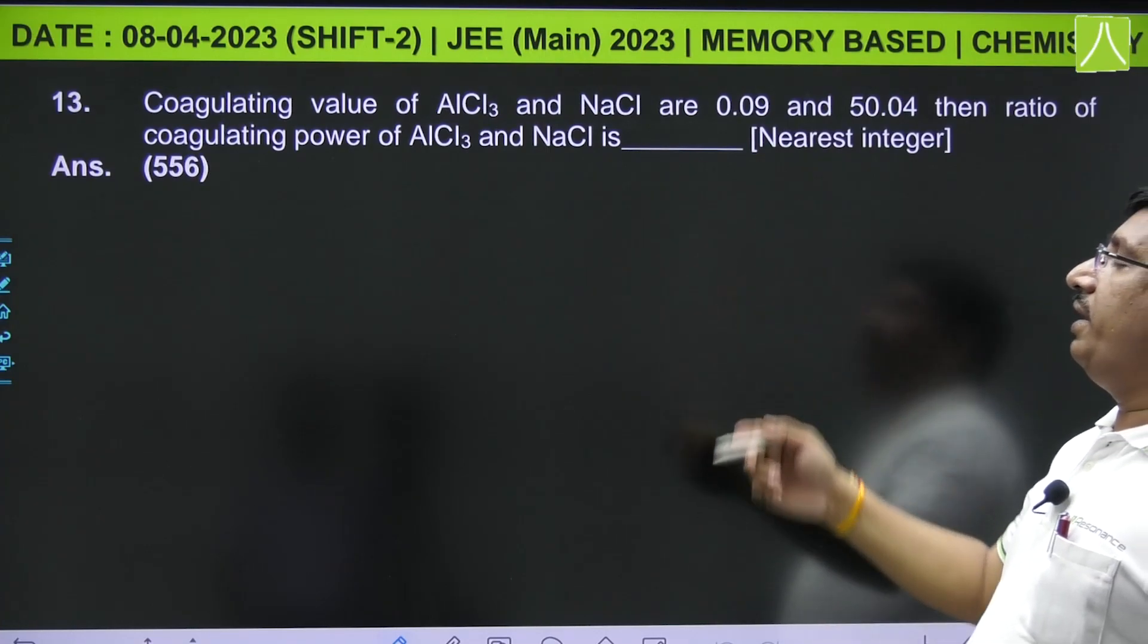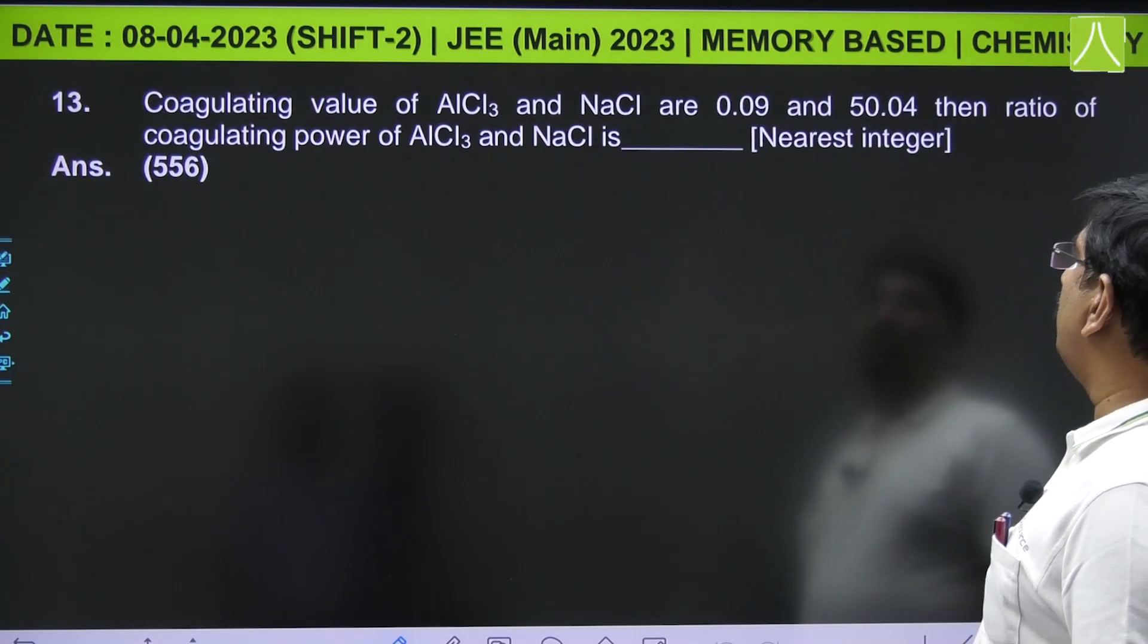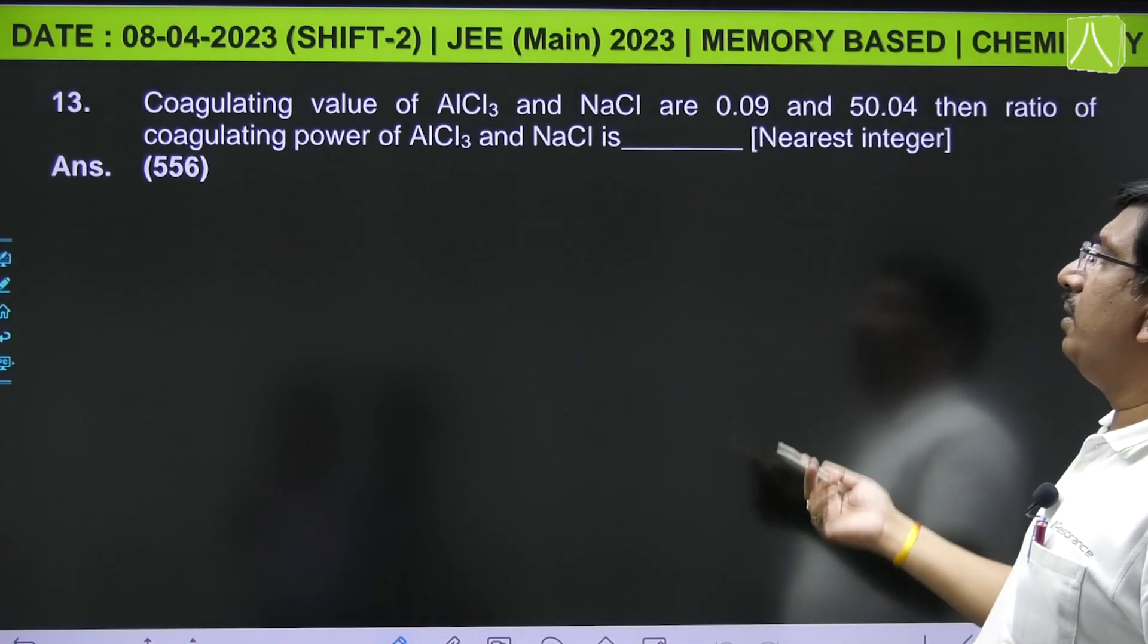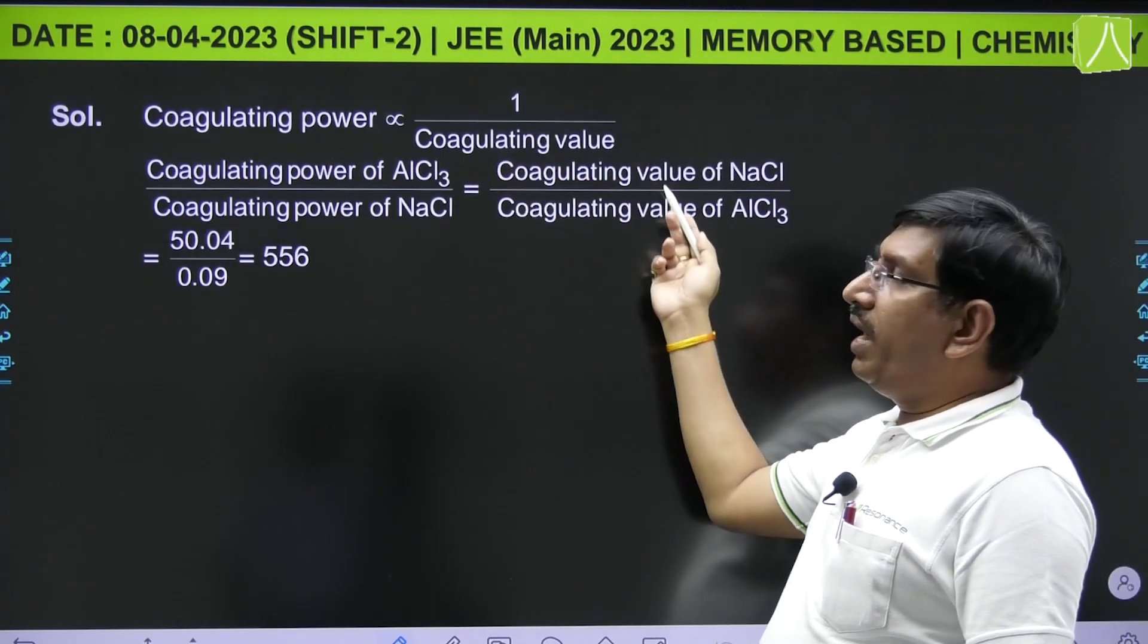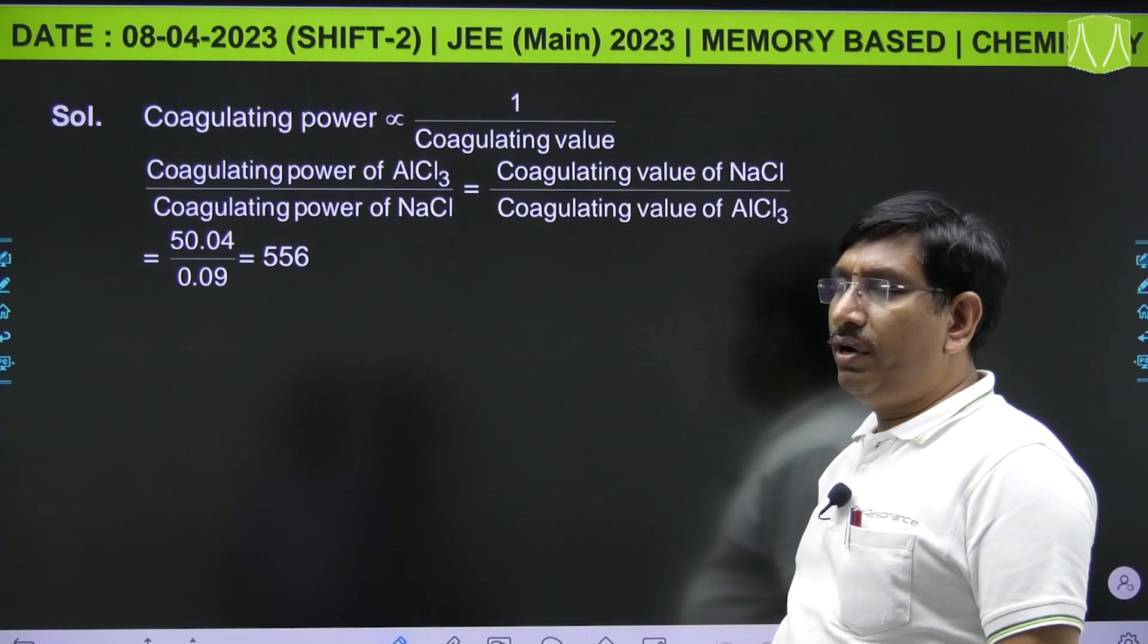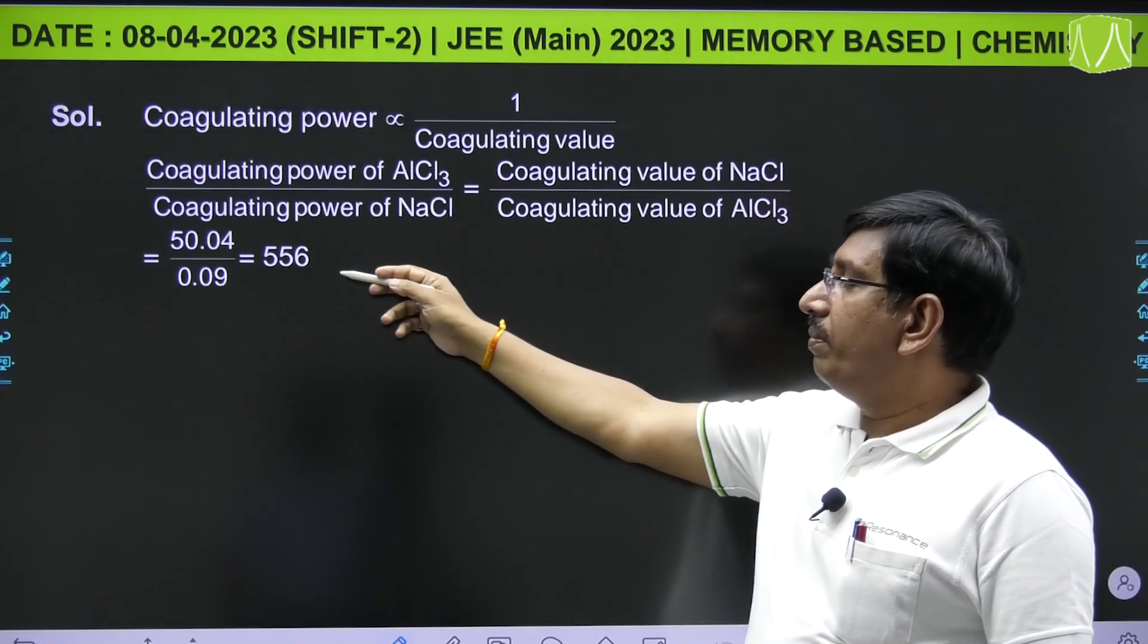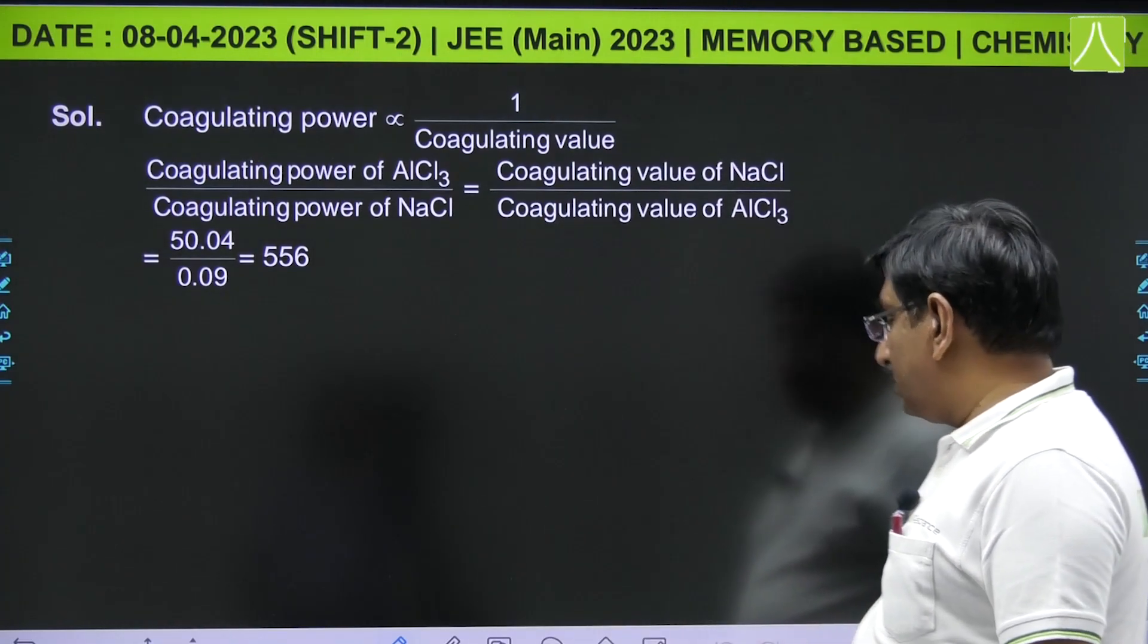Next, the coagulating value of AlCl₃ and NaCl are 0.09 and 50.04. Then the ratio of coagulating power of AlCl₃ and NaCl is? Coagulating power and coagulating value are inversely proportional. Now we have to find this ratio of coagulating powers. By substituting the data, you will get 556.